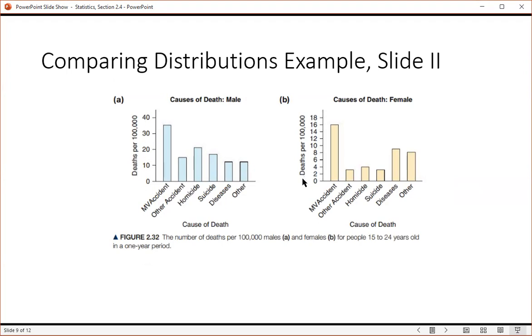So if you look at the vertical axis, you can see that these are not the same. This vertical axis of motor vehicle accidents here, this goes up to 35 deaths per 100,000. Meanwhile, the chart, the bar over in the second chart, which is roughly the same height, is only at 16. So the motor vehicle causes of death are actually close to twice as high for men as for women.